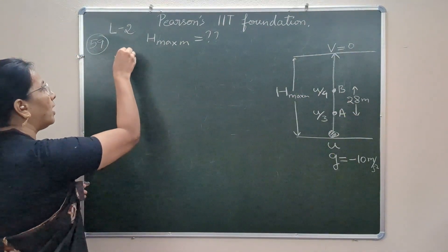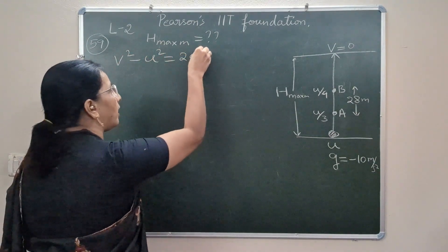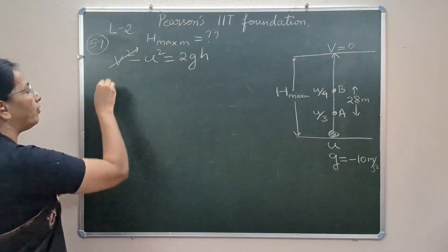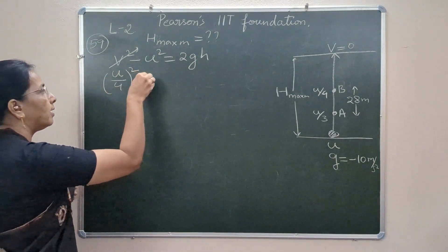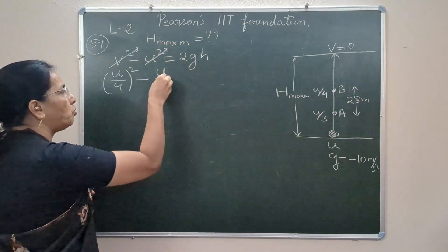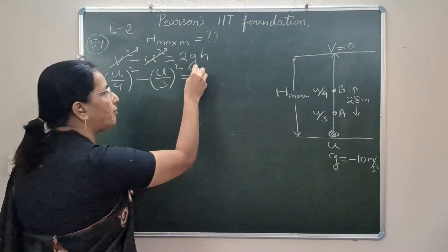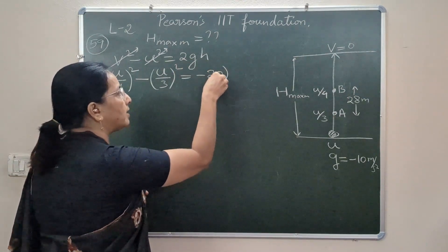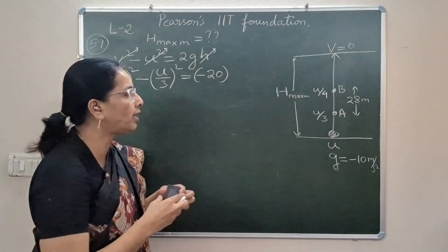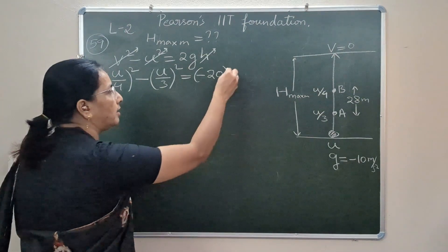So let's begin: we have v² - u² = 2gh. So final velocity is (u/4)², initial velocity is (u/3)². Since g is negative and minus 10, this turns out to be minus 20, and h is the distance between points A and B which is 28.